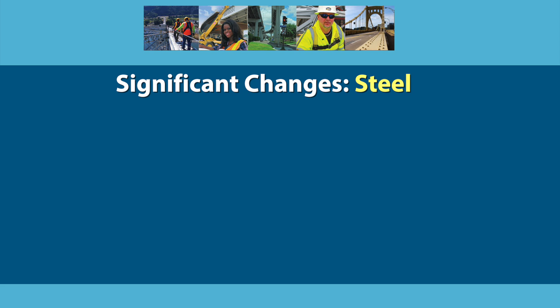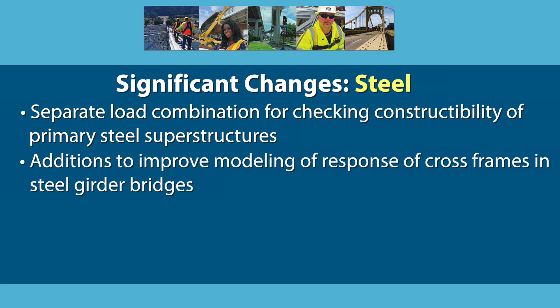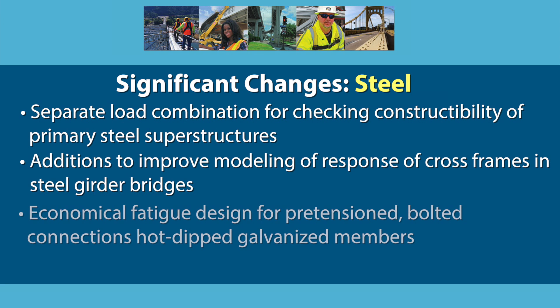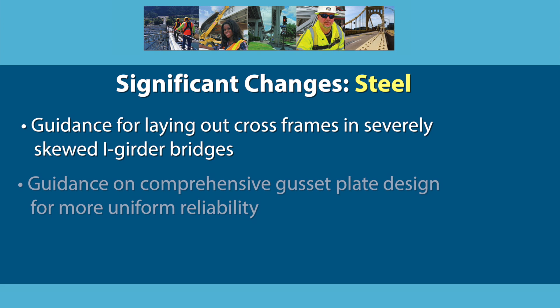Significant revisions were made to the section on steel: a separate load combination for checking the constructability of primary steel superstructures; additions that will improve modeling of the response of cross frames and steel girder bridges; a more economical fatigue design for pre-tension bolted connections and hot-dipped galvanized members; guidance for laying out cross frames in severely skewed girder bridges; and additional guidance on comprehensive gusset plate design for more uniform reliability.